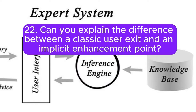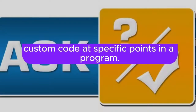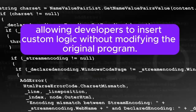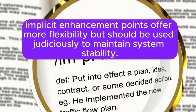Can you explain the difference between a classic user exit and an implicit enhancement point? A classic user exit is a predefined hook provided by SAP that allows developers to add custom code at specific points in a program. In contrast, an implicit enhancement point is a blank space within standard code, allowing developers to insert custom logic without modifying the original program. While user exits require explicit activation and are documented by SAP, implicit enhancement points offer more flexibility but should be used judiciously.